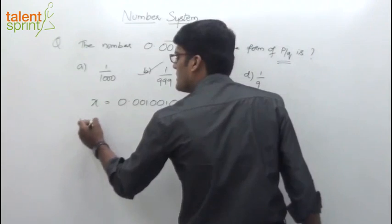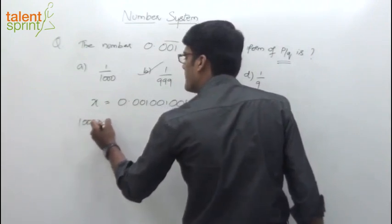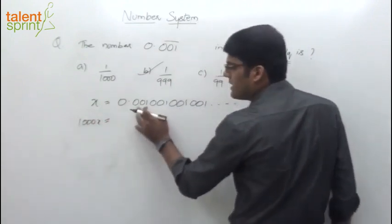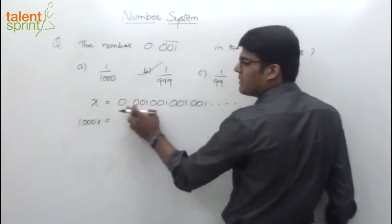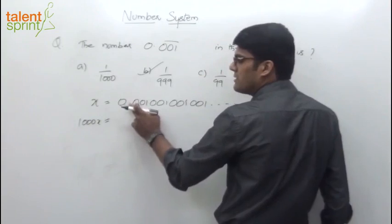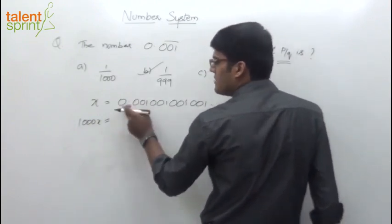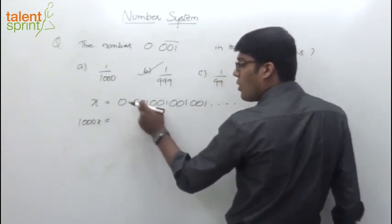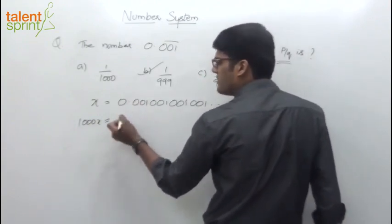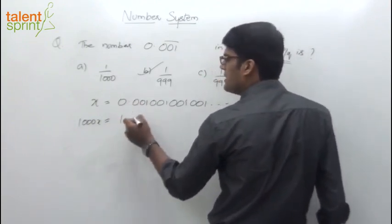So 1000x equals — the decimal shifts by 3 places because we have multiplied by 1000. So this becomes 1.001001001 and so on.